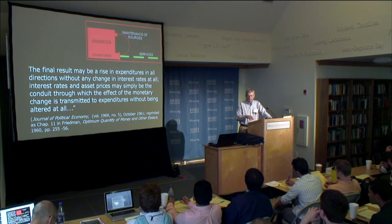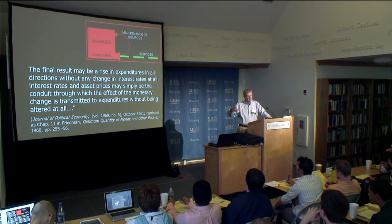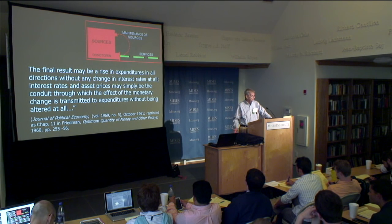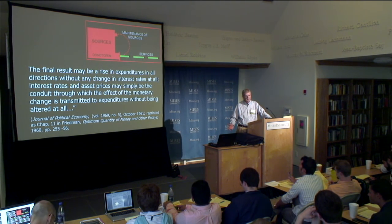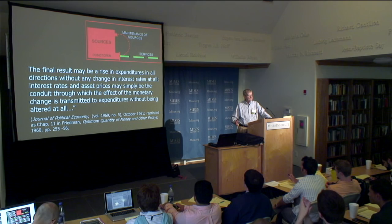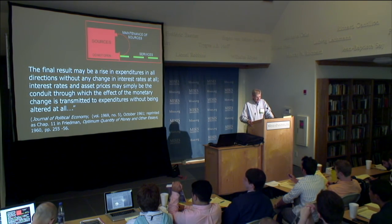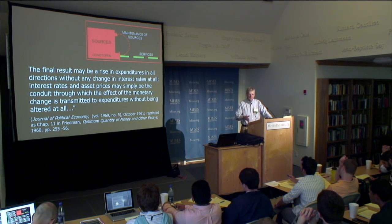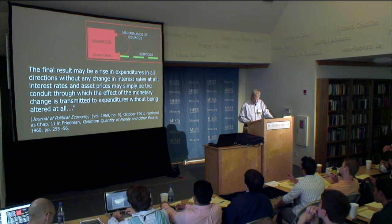To be fair to Friedman, in this same 1961 article he talked about how things would be very different if you're thinking in terms of building an industrial building or creating machines — things that actually do take time. Of course that would be very different — and in fact that's the focus of the Austrians in seeing what's going on. Yet he drops that. He says it, but it doesn't become part of his theory. He sticks with the Knightian view.